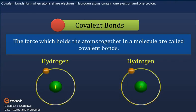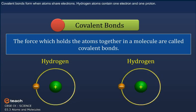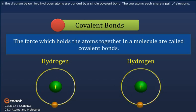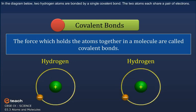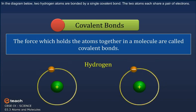Covalent bonds form when atoms share electrons. Hydrogen atoms contain one electron and one proton. In the diagram below, two hydrogen atoms are bonded by a single covalent bond. The two atoms each share a pair of electrons.